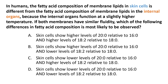Here's a practice question: In humans, the fatty acid composition of membrane lipids in skin cells is different from that of internal organs because internal organs function at a slightly higher temperature. If both membranes have similar fluidity, which of the following differences in fatty acid composition is most likely to be observed? The choices give options of longer or shorter fatty acid chains and different degrees of unsaturation. Note: in fatty acid notation like 20:1, the first number is the number of carbons and the number after the colon is the number of double bonds.